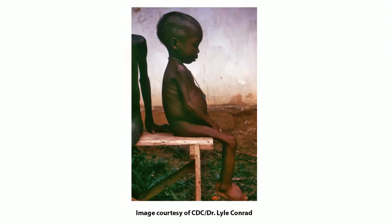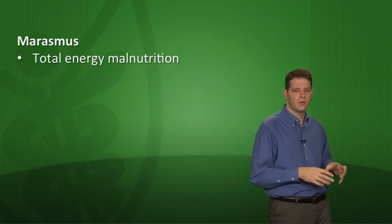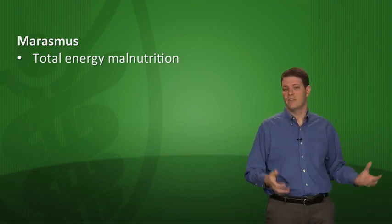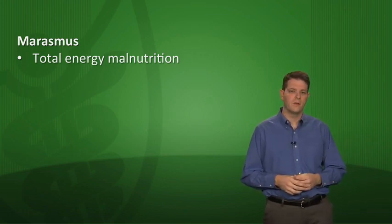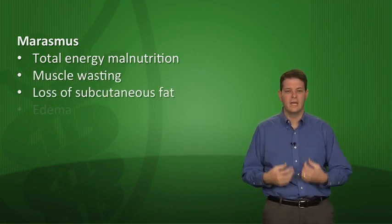A mnemonic for the main features of kwashiorkor is FLAME: FL is for fatty liver, A is for anemia, M is for malnutrition (protein malnutrition), and E is for edema. The classic image is a malnourished child with muscle wasting and a large protuberant belly from edema, ascites, and hepatomegaly, plus thinning hair and depigmentation. The second malnutritional state is marasmus — a total energy malnutrition where not just protein but fat, carbohydrates, and everything is deficient.